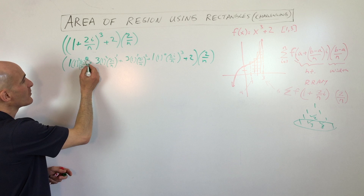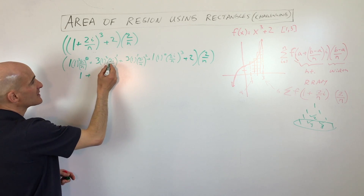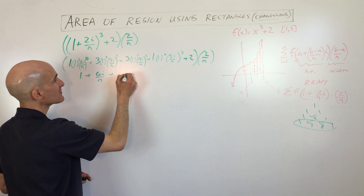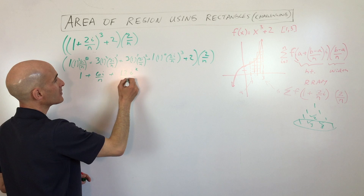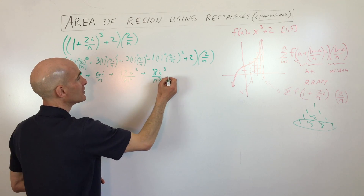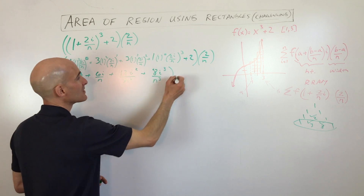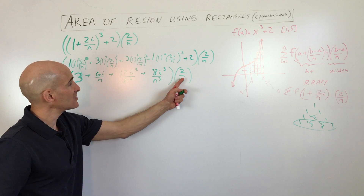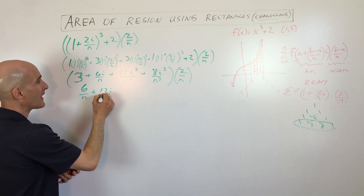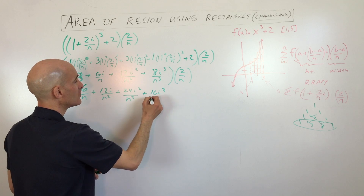Let's simplify. Anything to the zero power is one. One cubed is one times one is one. One squared is one times three is three, times two gives us six-i over N. Two squared is four times three is twelve, giving us 12i squared over N squared. One to the zero is one times one is one. Two cubed is eight-i cubed over N cubed. We combine the constant two and one to make three, all times two over N. Distributing, we get: six over N plus 12i over N squared plus 24i squared over N cubed plus 16i cubed over N to the fourth.